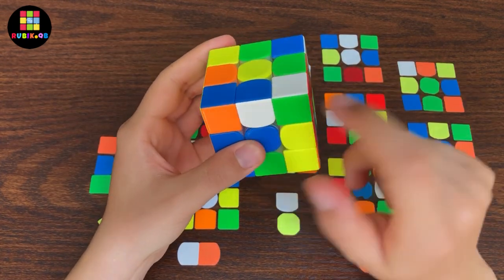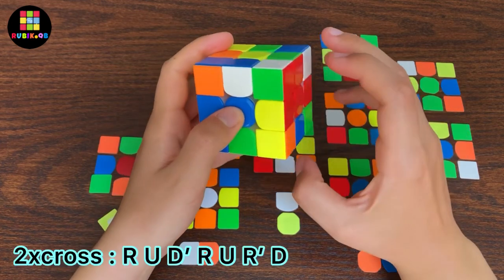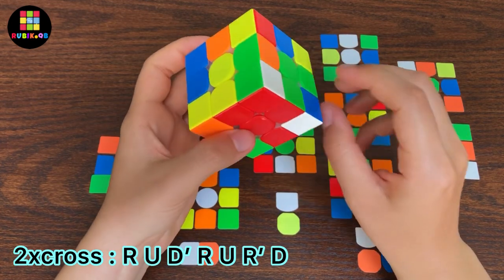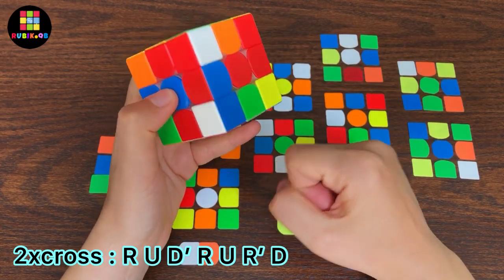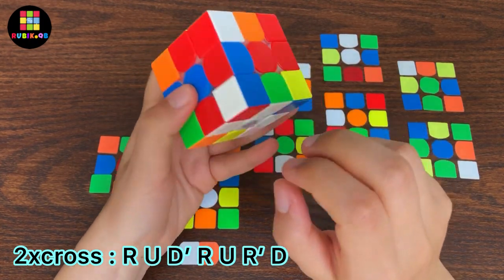For solving the cross, he did R. For this F2L, he did keyhole—U and D prime at the same time. Then he put this corner into the correct position here, so he did R U R prime and D.